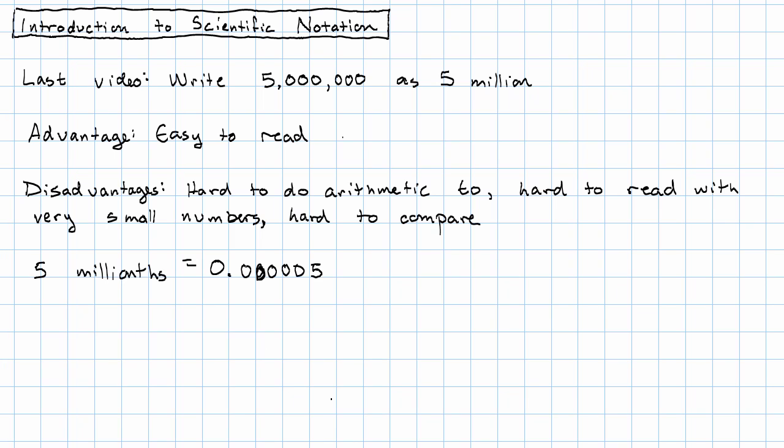But that's still fairly hard to read. Another disadvantage is that they're hard to compare. Right, we might be thinking, which is bigger, 7 trillion or 92 billion? If we don't remember what order billion and trillion come in, we're going to be completely lost.